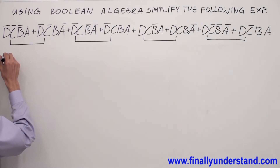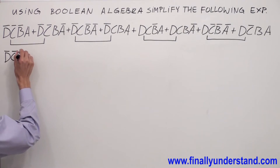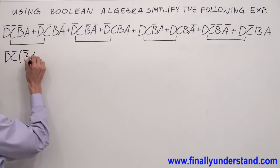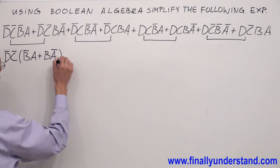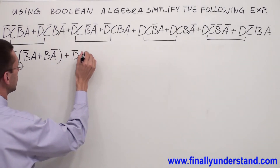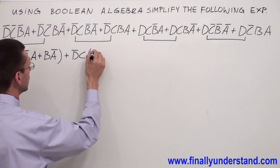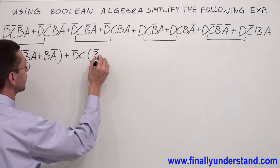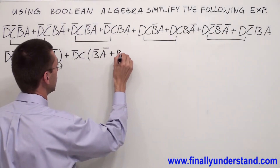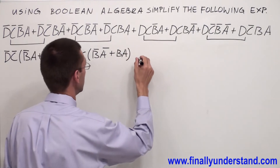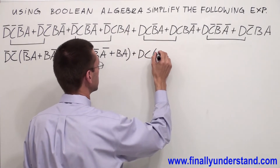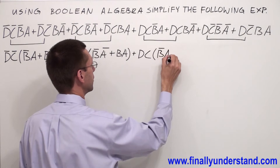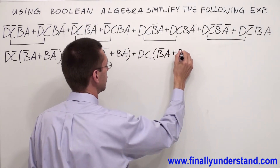Let me rewrite the expression one more time. So I'm going to have D0C0, and inside of the parenthesis, I'm going to have B0A or B0. Or D0C, and I have B0, A0, or BA. From these two, I'm going to factorize DC. Inside of the parenthesis, I'm going to have B0A or BA0.